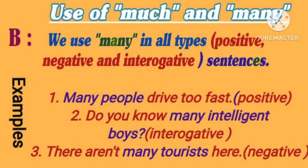We use many in all types of sentences. Examples: 1. Many people drive too fast. This is a positive sentence. 2. Do you know many intelligent boys? This is an interrogative sentence. 3. There are not many tourists here. This is a negative sentence.